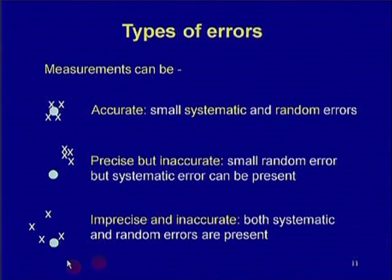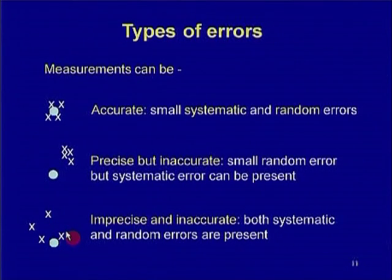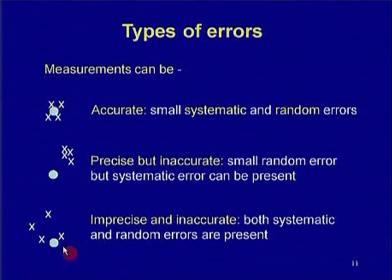An imprecise and inaccurate measurement is one where you have lots of random error — the shooter gets a completely different location every time, and all locations differ from the target. Both systematic and random errors are present. Your measurement may be precise but inaccurate, or it may be imprecise and inaccurate both — no repeatability and therefore no accuracy.